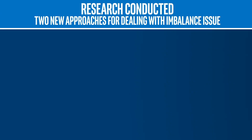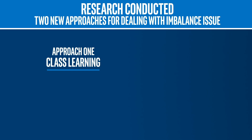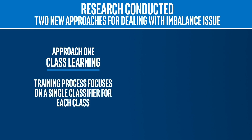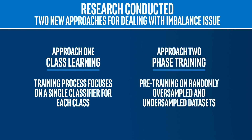The research conducted includes two new approaches for dealing with this imbalance issue. One: class learning — using this approach, the training process focuses on a single classifier for each class. And two: phase training with pre-training on randomly oversampled and undersampled data sets. Continuous rounds of testing will determine the effects of class imbalance on the classification performance and make it possible to compare other methods to discover which approach achieves the best result.